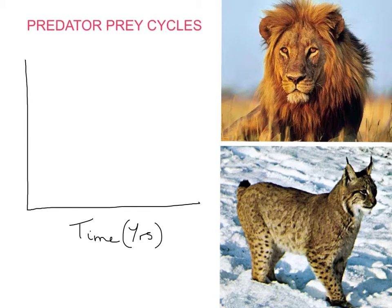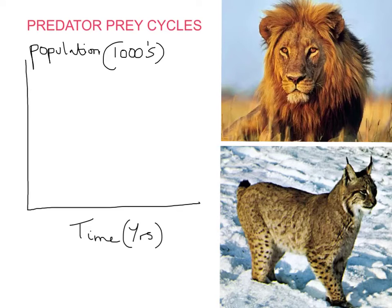And up the side, on the y-axis, we have population. So let's put in at the top, and that would be measured, let's say, in the thousands. There.